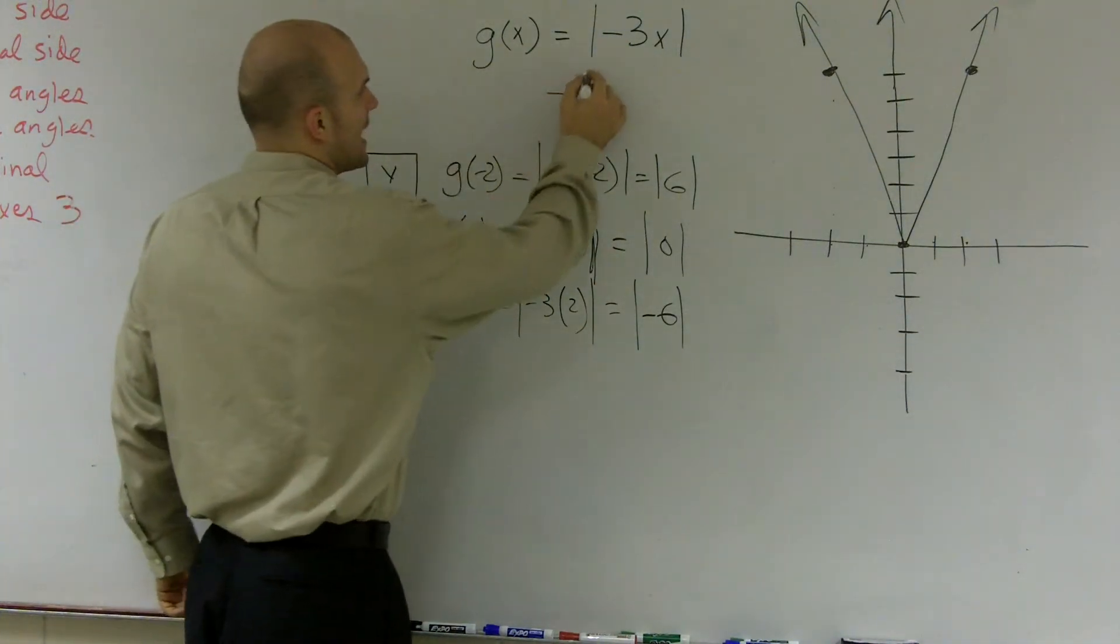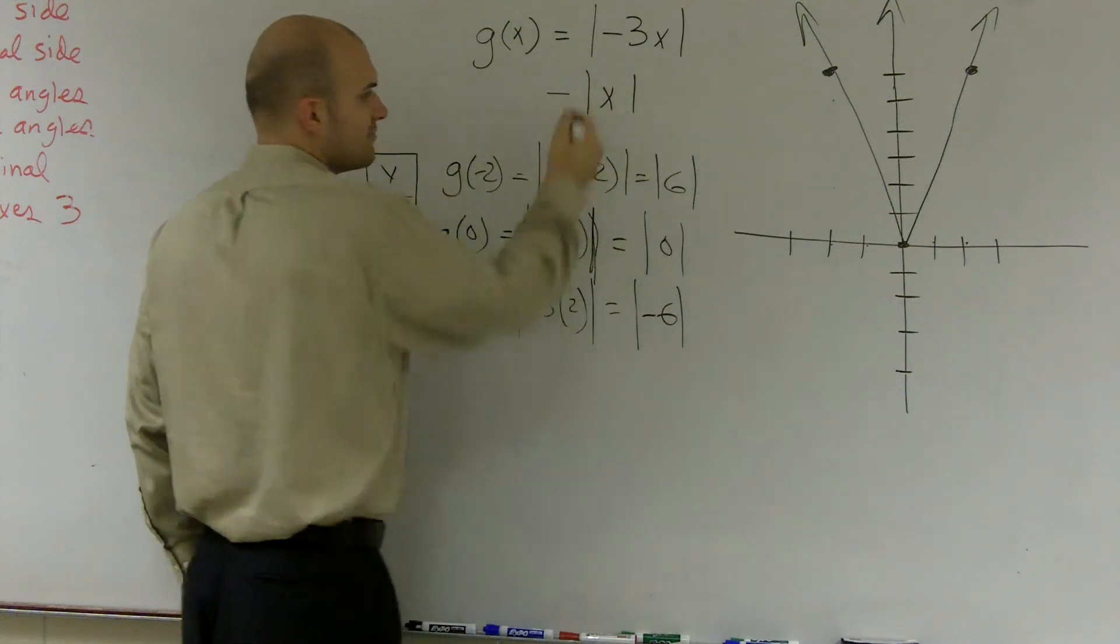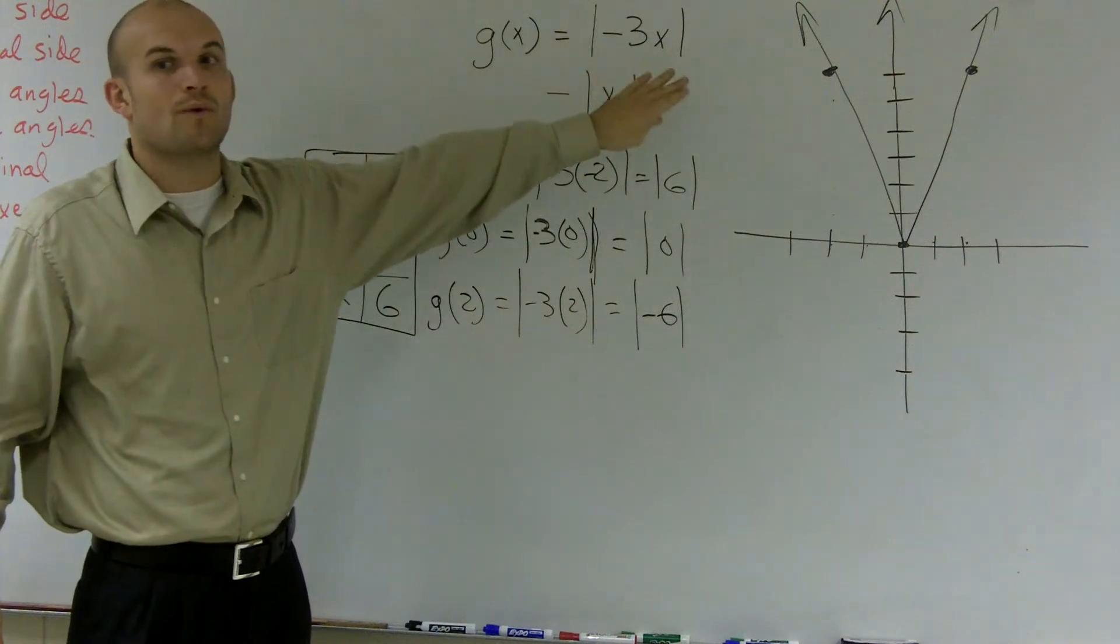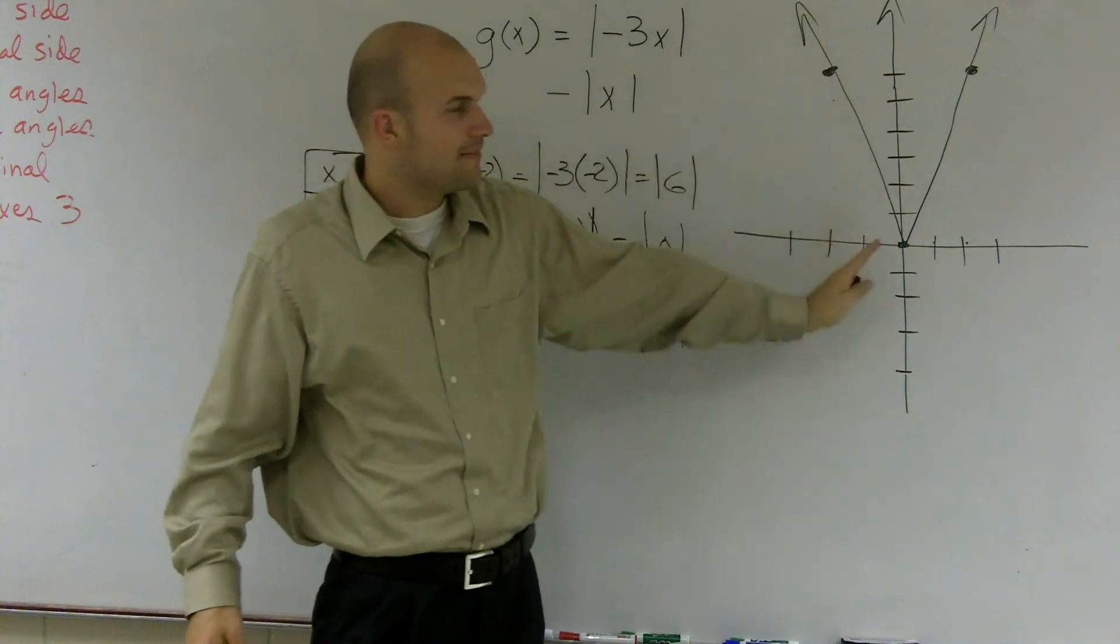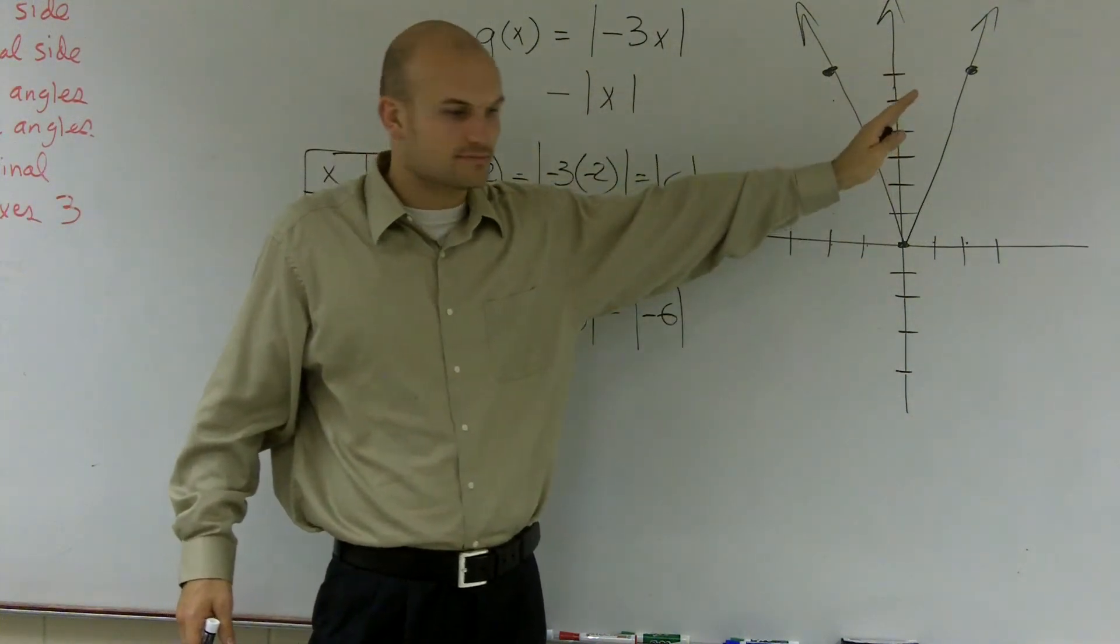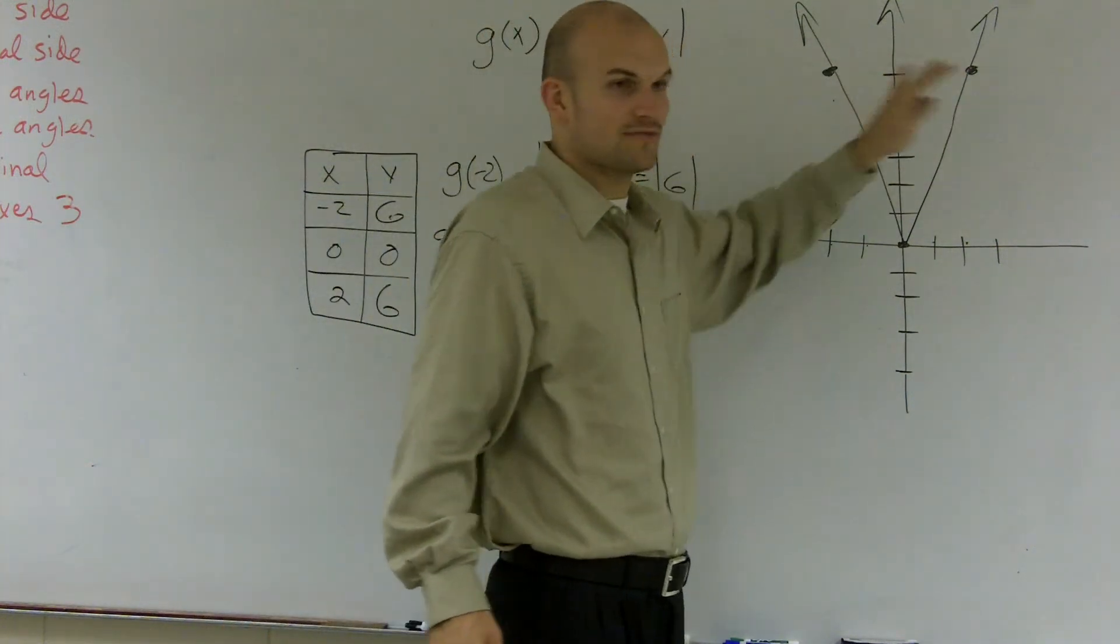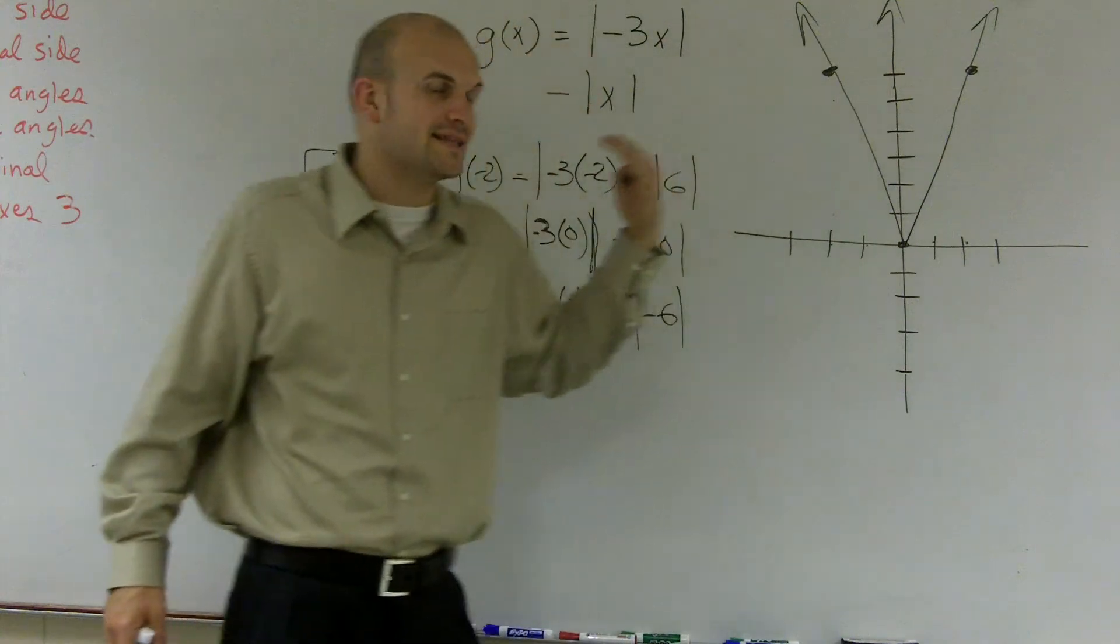That's only when we have a reflection outside of our function do we reflect it about the x-axis. Since this is inside of our function, we're reflecting about the y-axis, which you can notice that this function is reflexive over our y-axis. So you're not going to see that reflection.